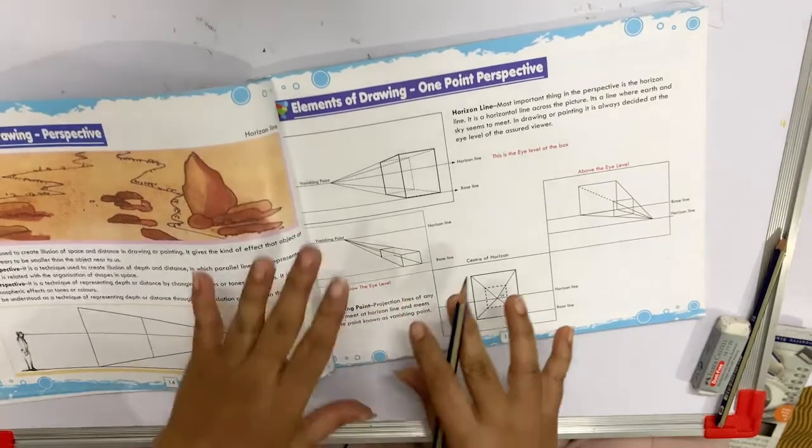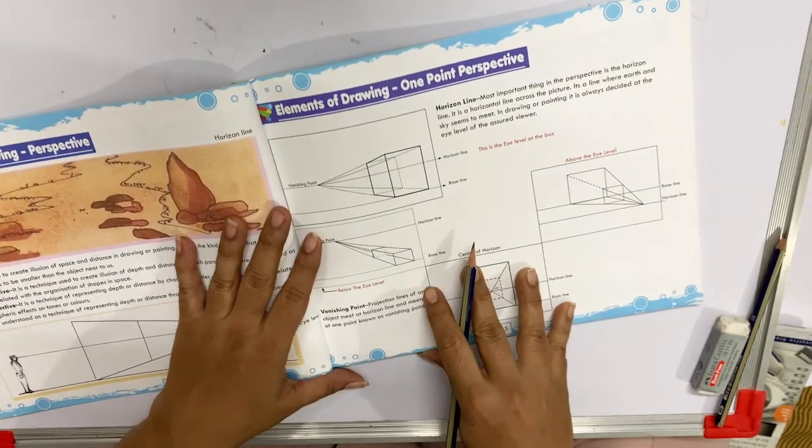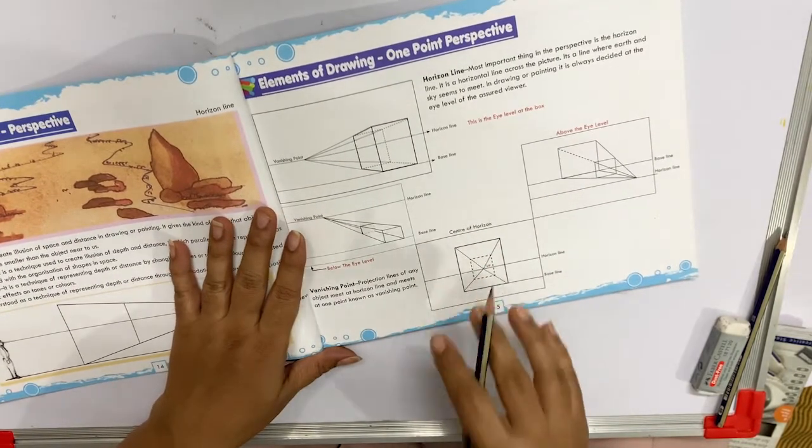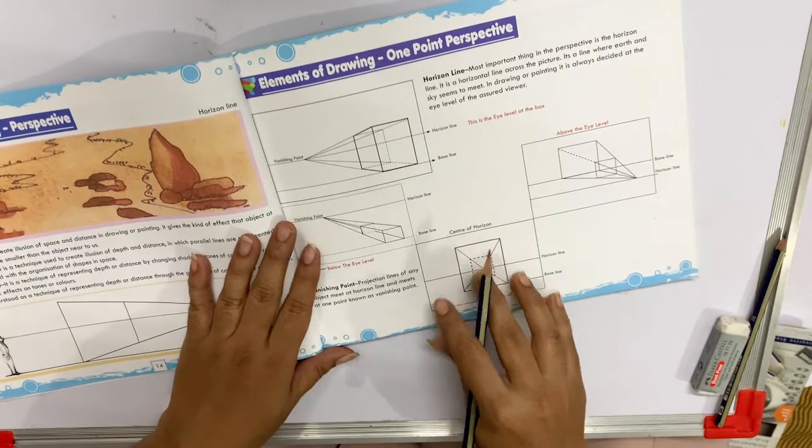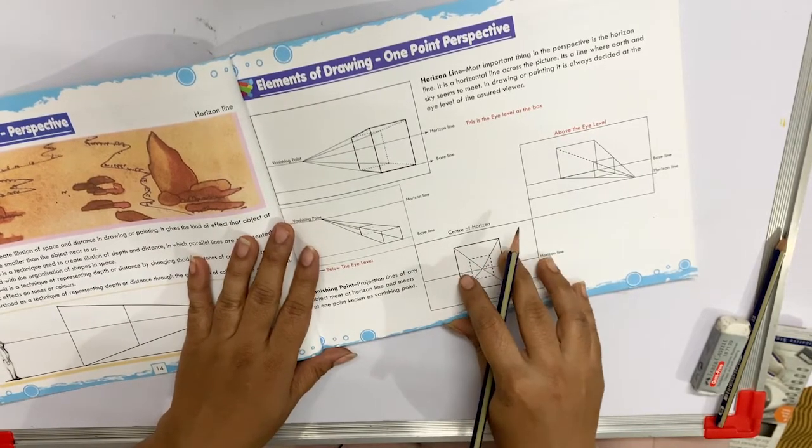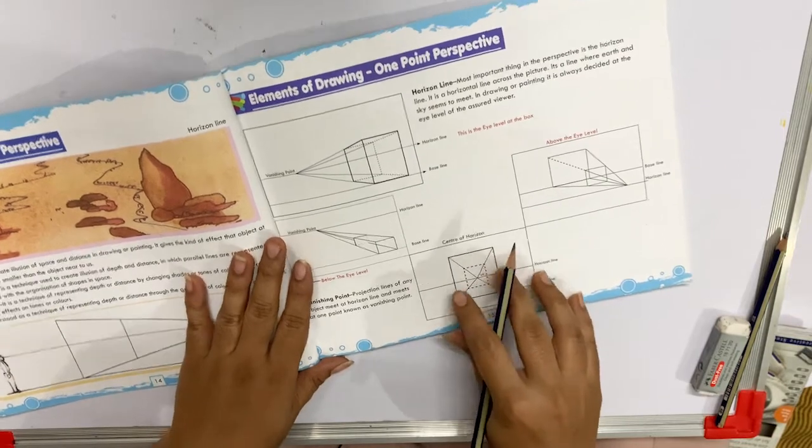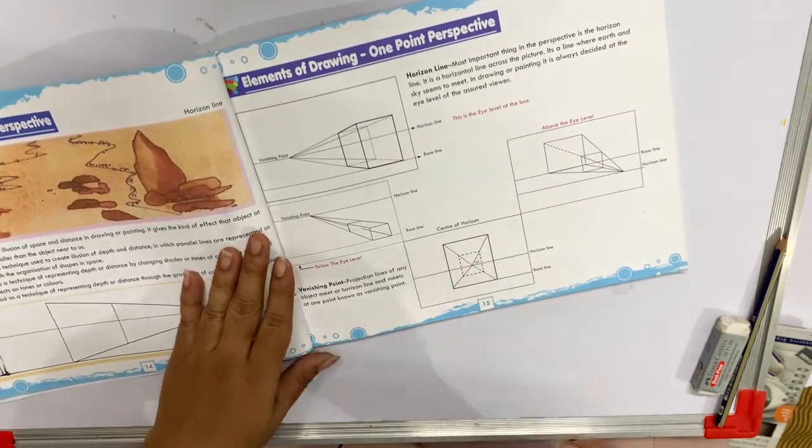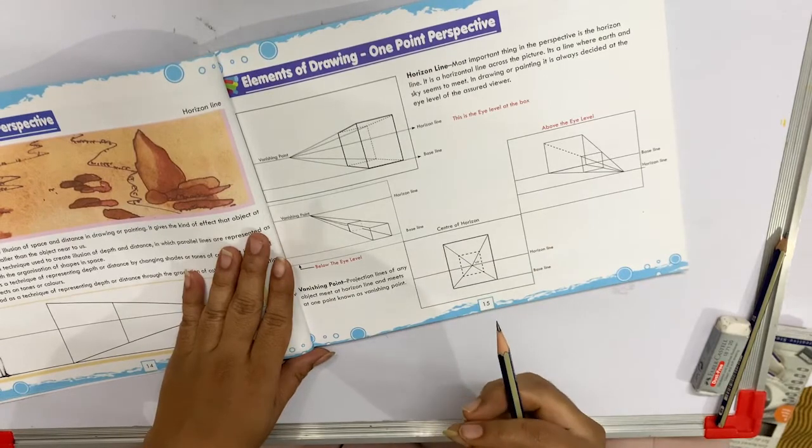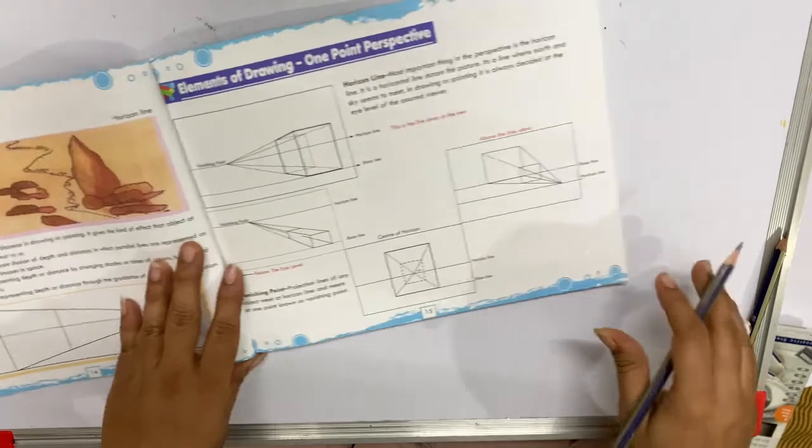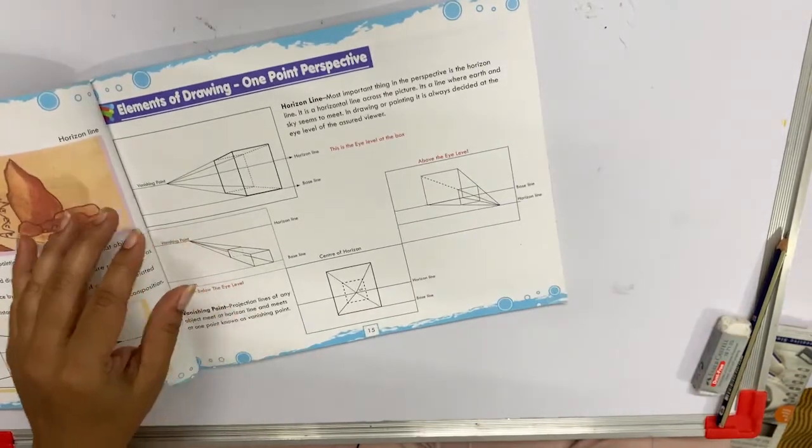Hello students, today we are going to learn a technique called perspective. It is a technique we are using to create illusions of space and distance in our drawing. It gives an effect where an object at a distance appears to be smaller and objects near to us appear to be bigger.